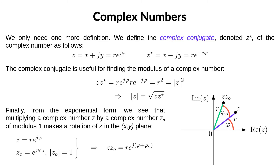The last definition we need is that of the complex conjugate. If z equals x plus jy, then the complex conjugate is defined to be x minus jy, denoted z star. The complex conjugate is useful when we want to find the modulus of a complex number written in algebraic form — it is equal to the square root of z times z star. Also, multiplying a complex number by a complex number of modulus 1 results in a rotation. This is all we need to know about complex numbers.